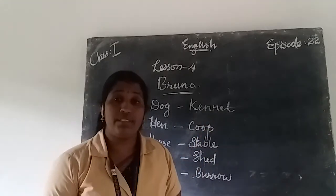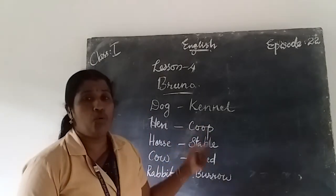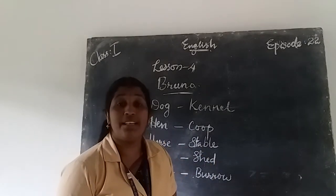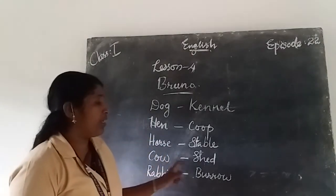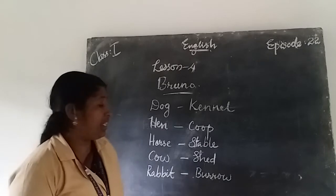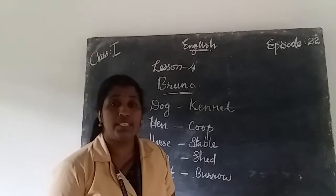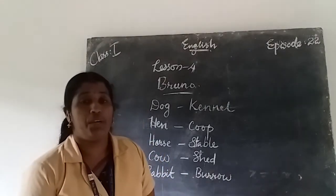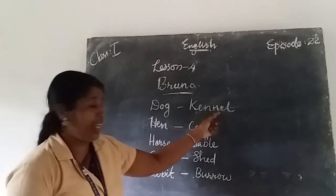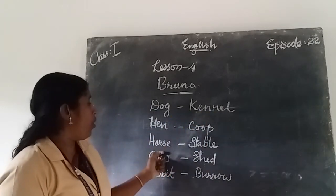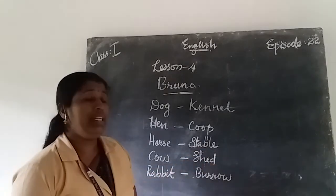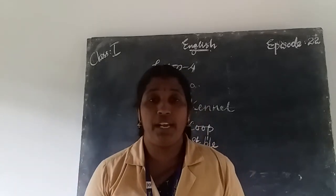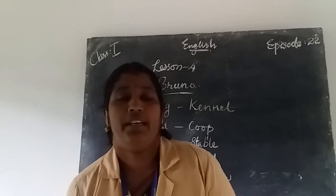Let us review: dog lives in kennel, hen lives in coop, horse lives in stable, cow lives in shed, rabbit lives in burrow. Different animals live in different houses.